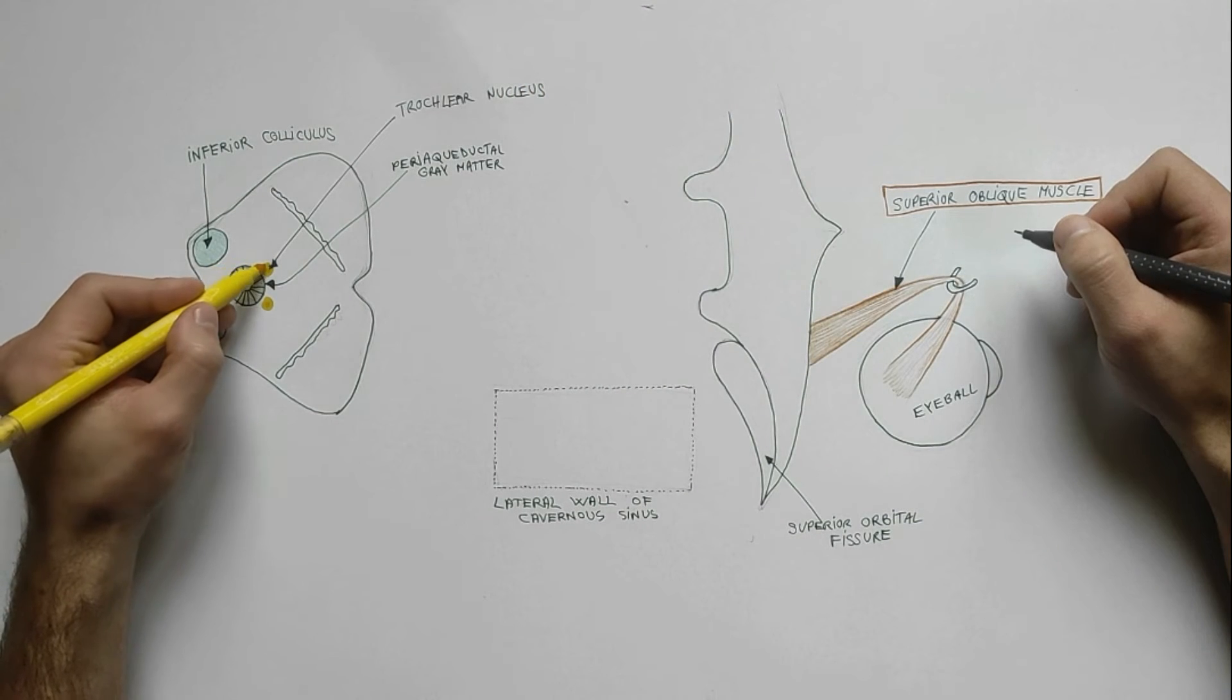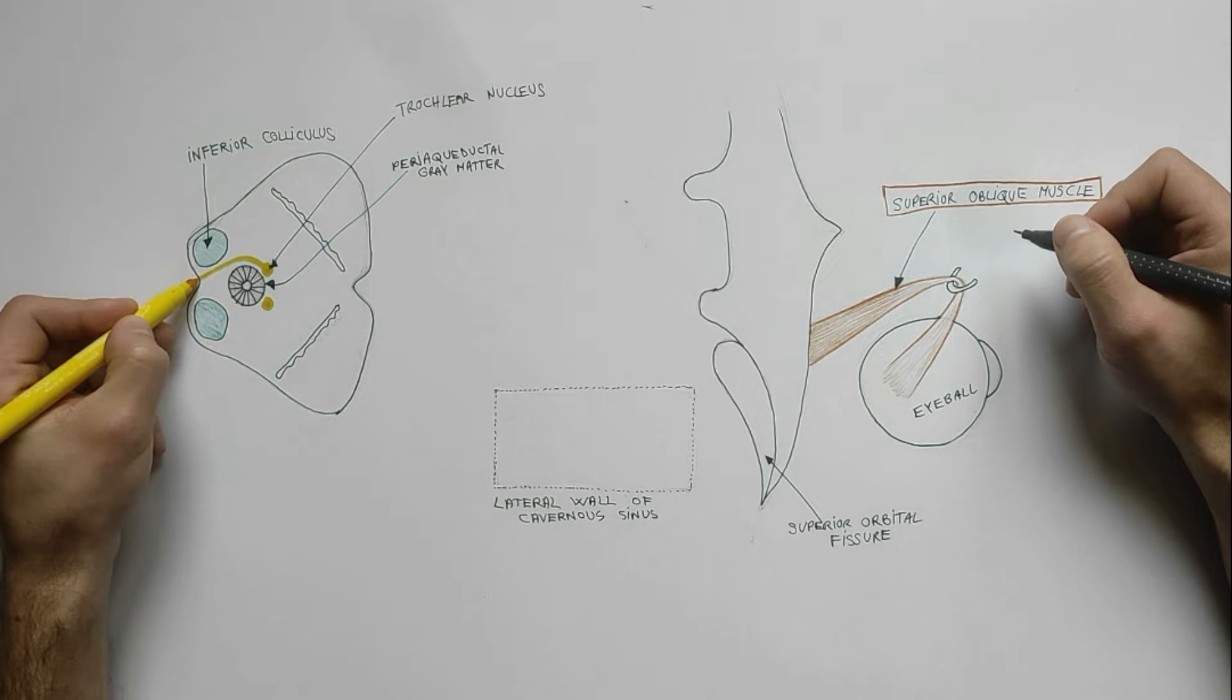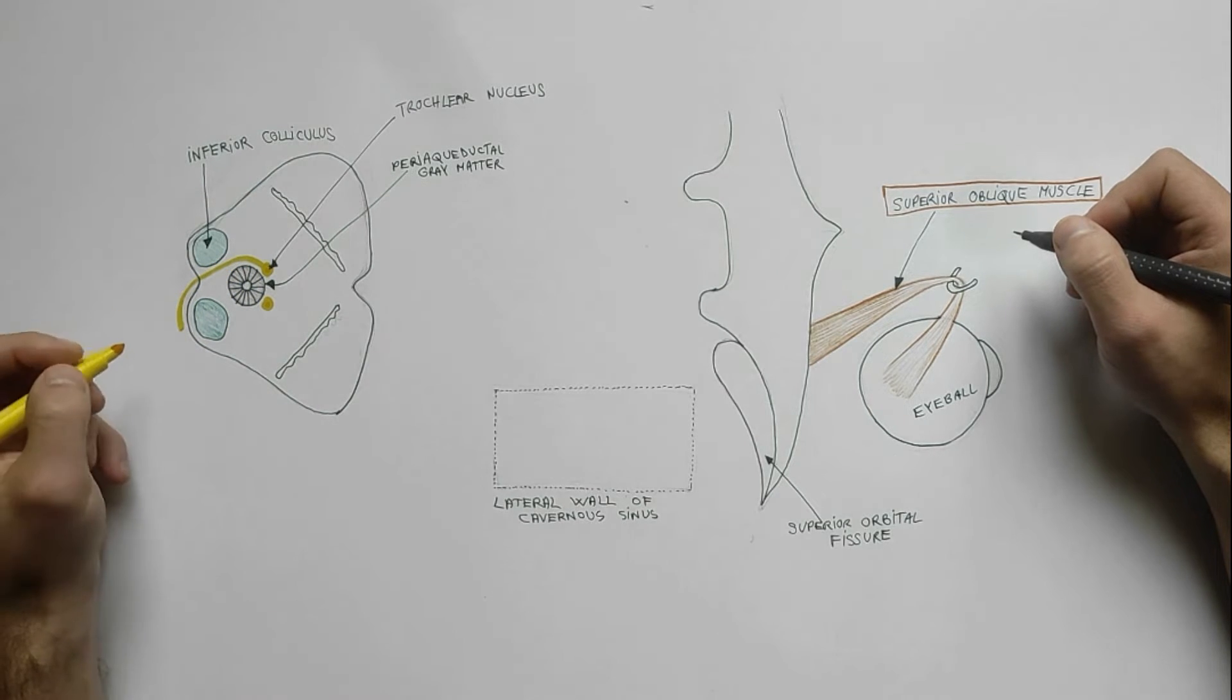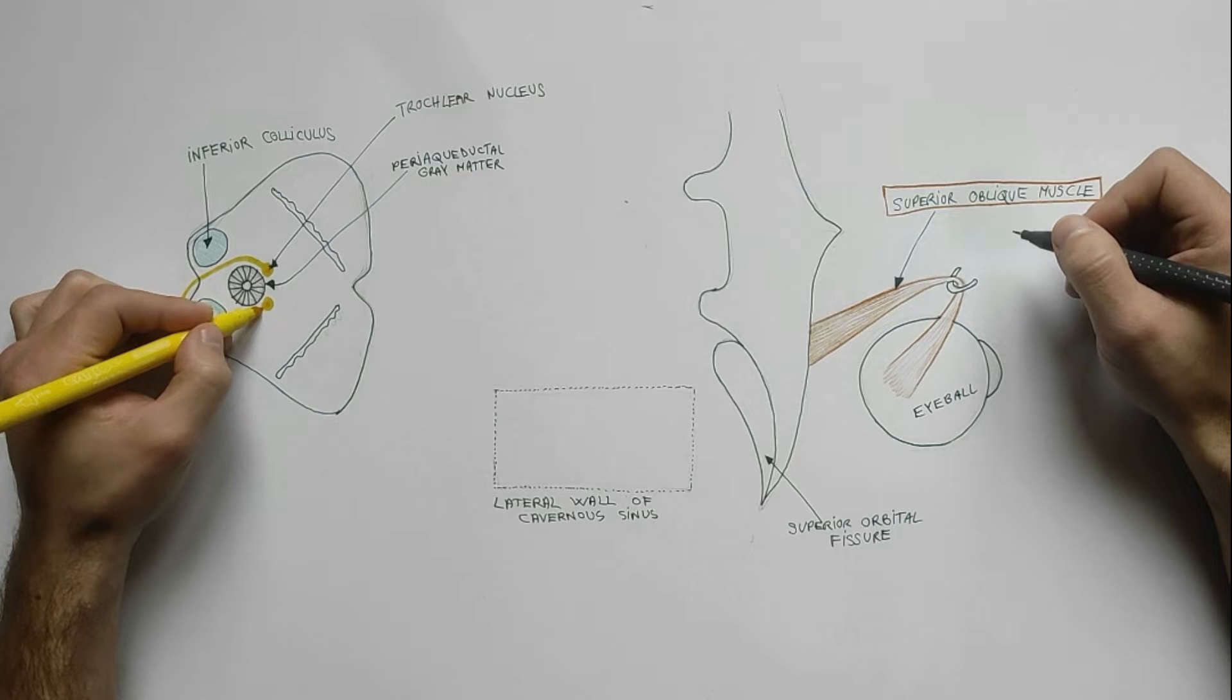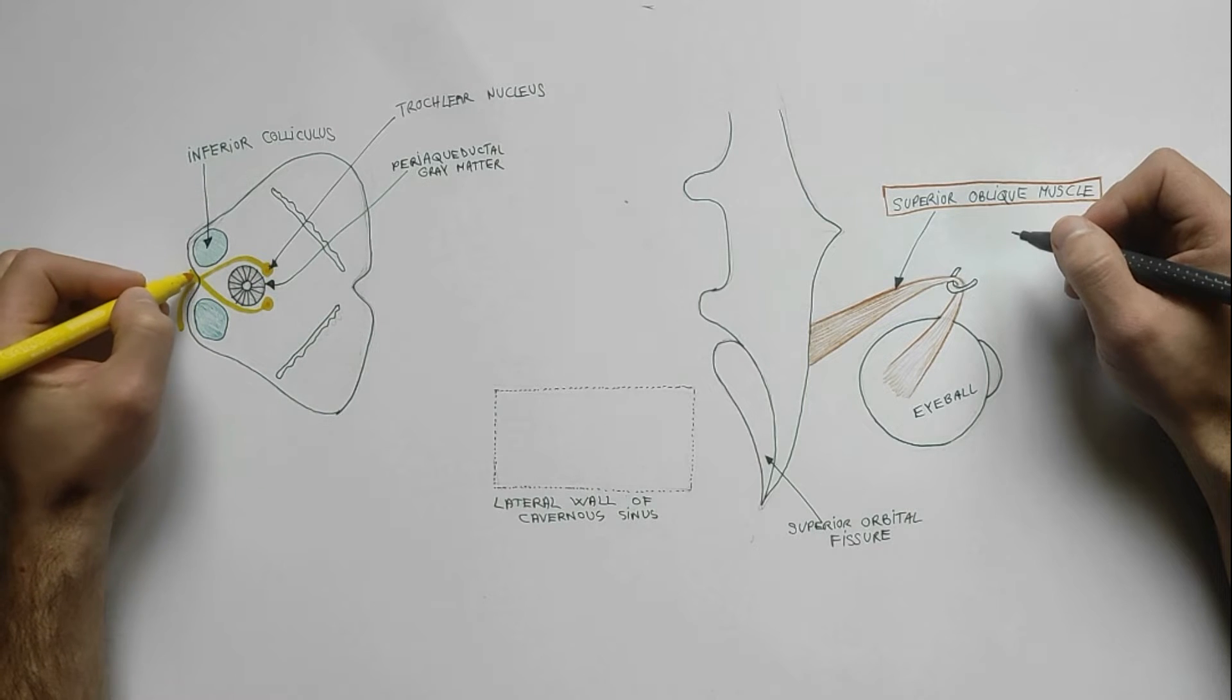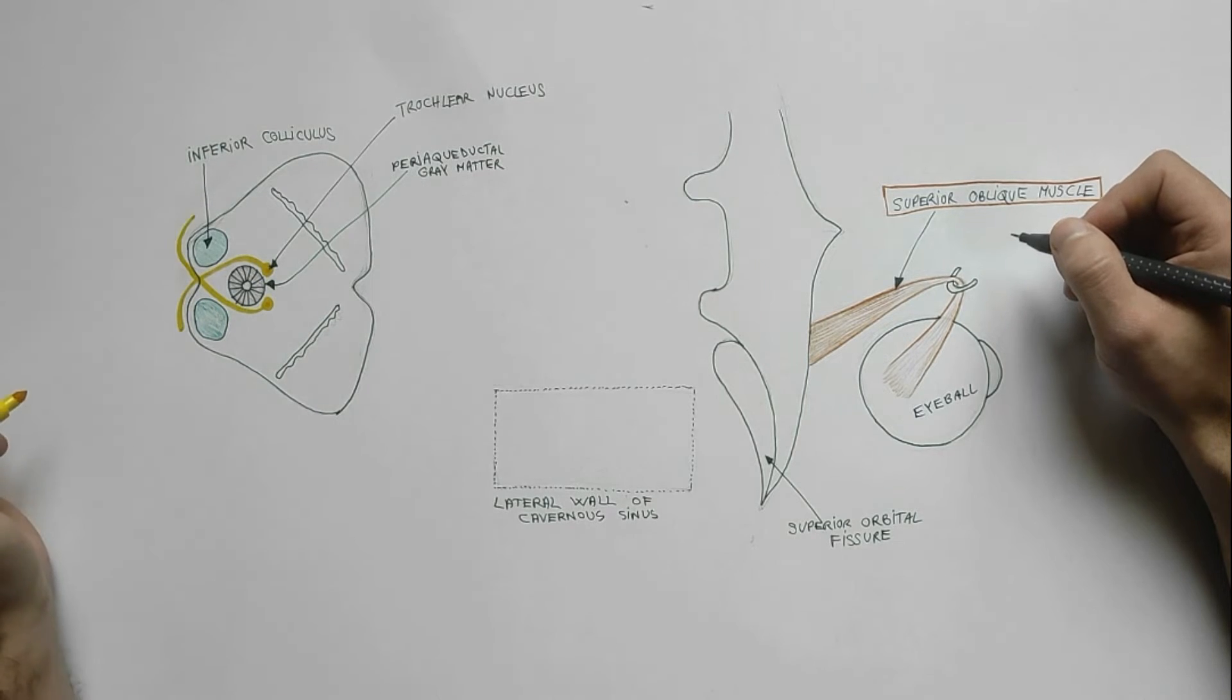Axons arising from the trochlear nucleus course dorsally around the periaqueductal grey matter and cross the midline. The crossed axons emerge from the dorsal aspect of the midbrain, just caudal to the inferior colliculus.